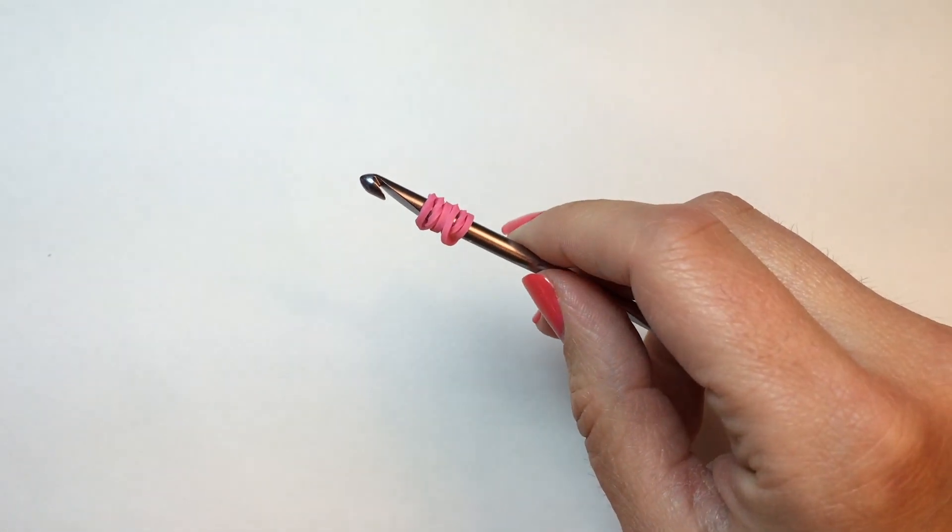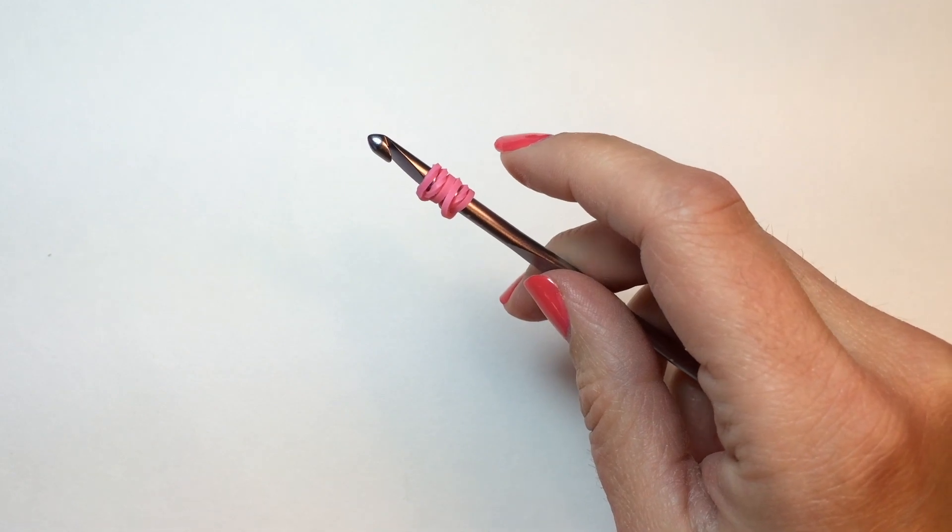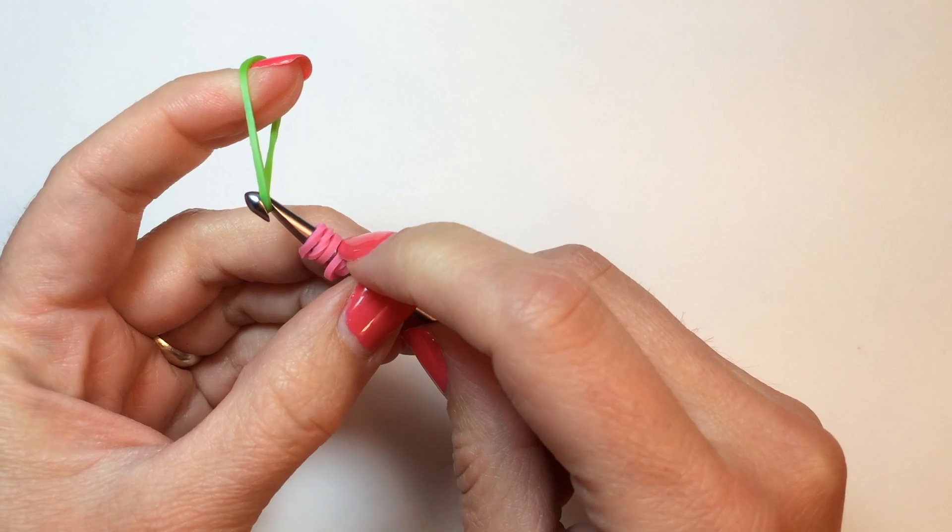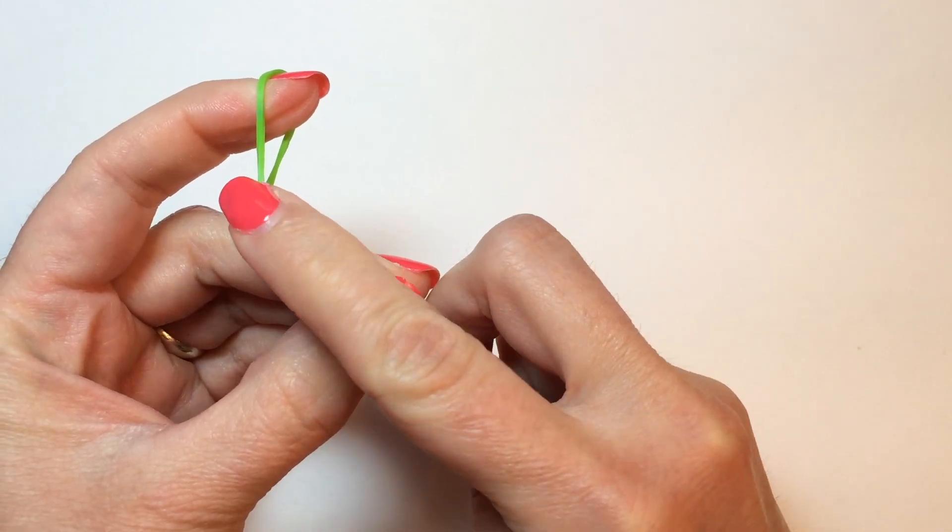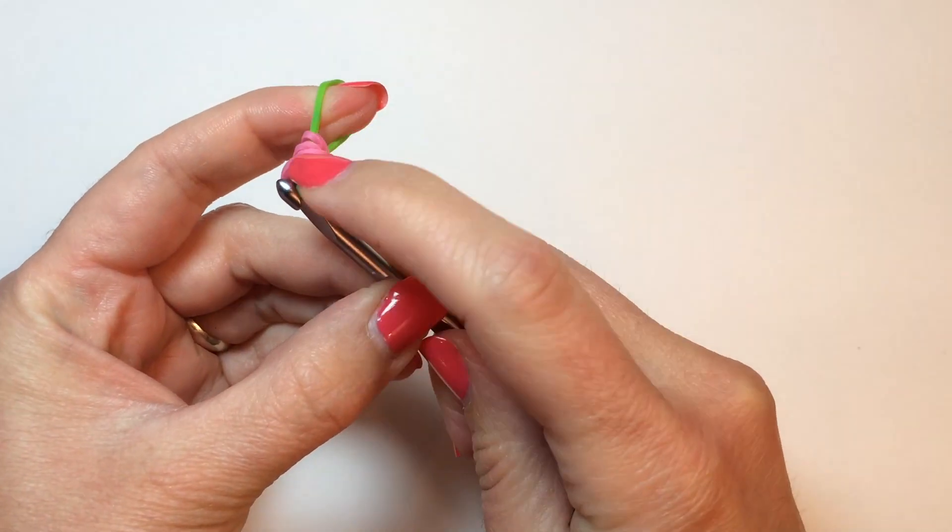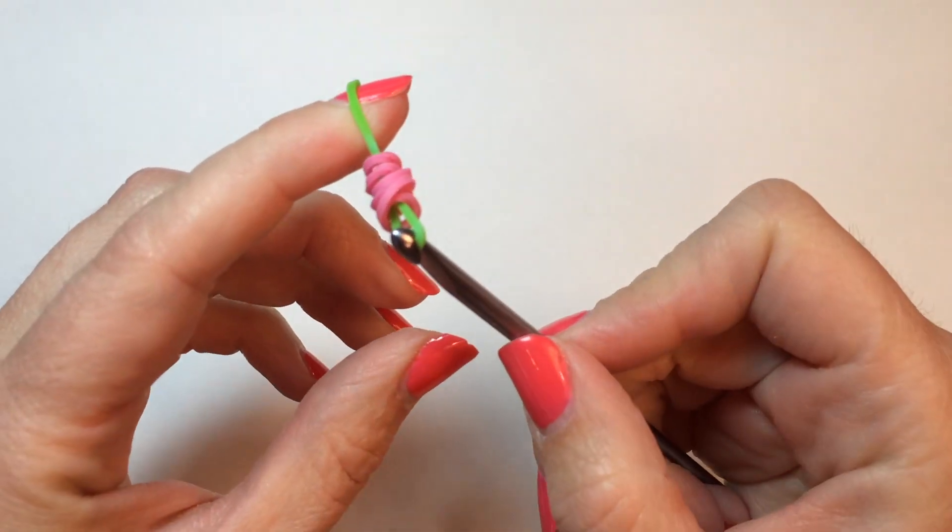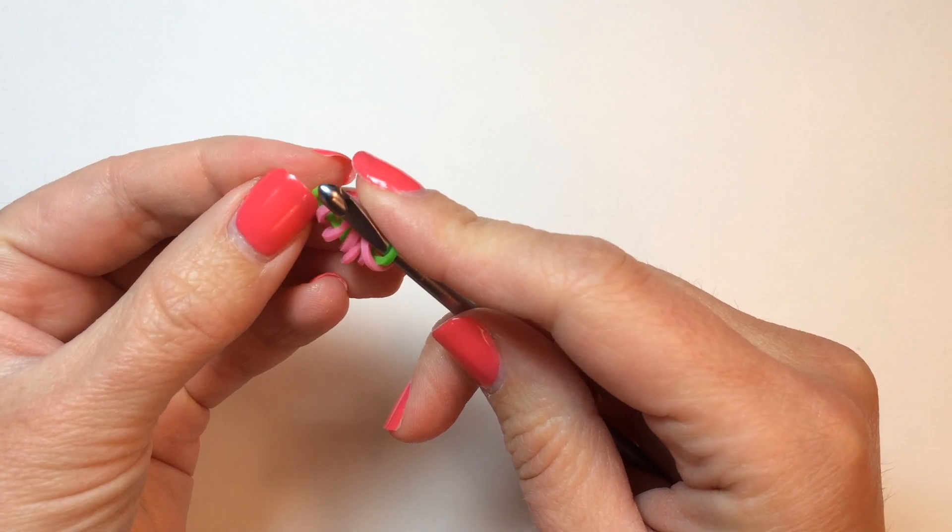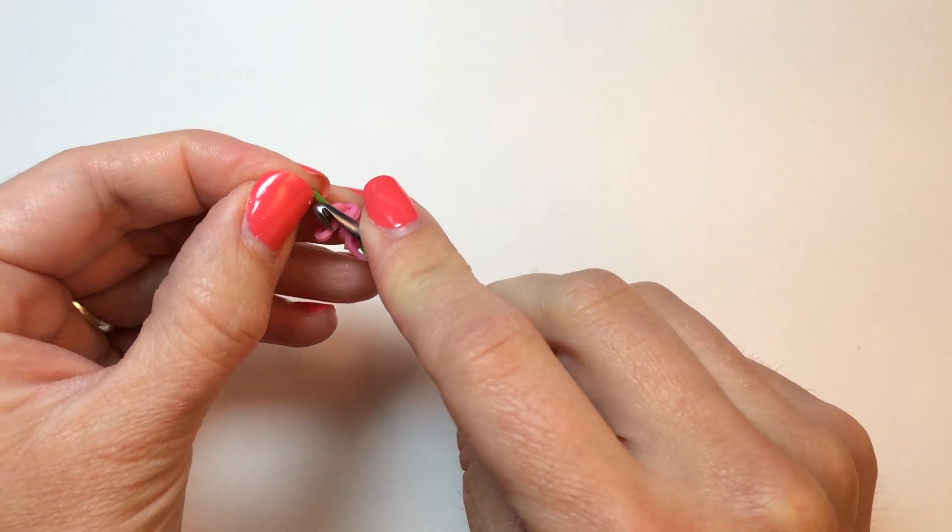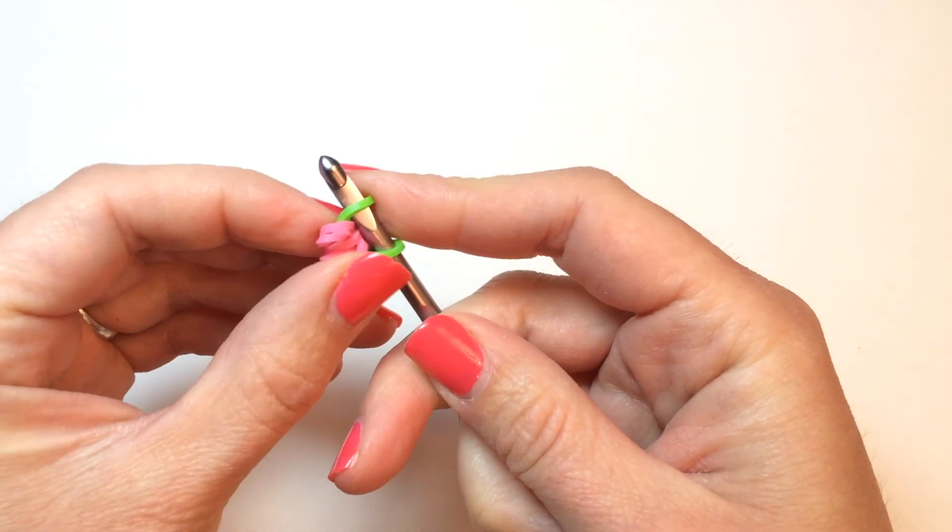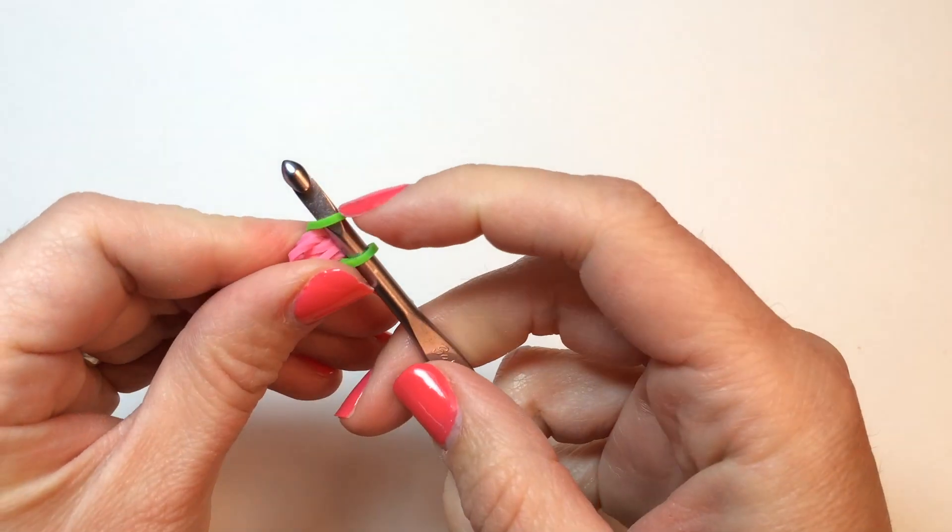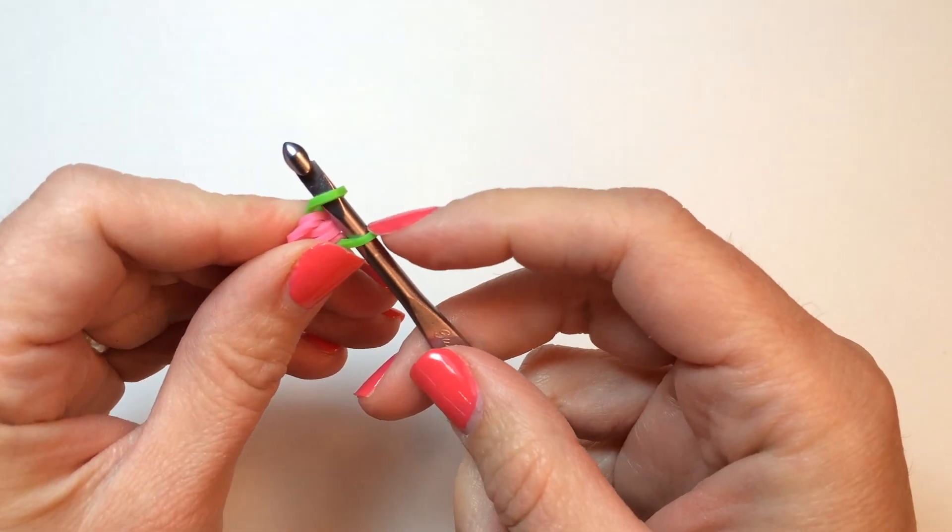Then, take a single green band, or whatever color you're going to make your leaves and flowers, and push those tripled over bands onto the green rubber band. Then, we're going to create a slip knot, hooking both sides onto your hook like that, and then pulling this side through the center of this side.